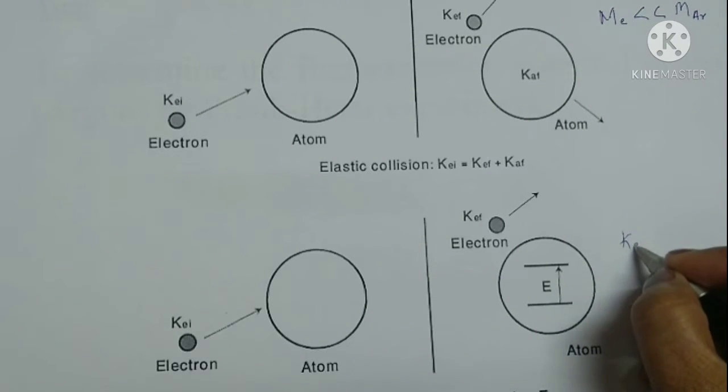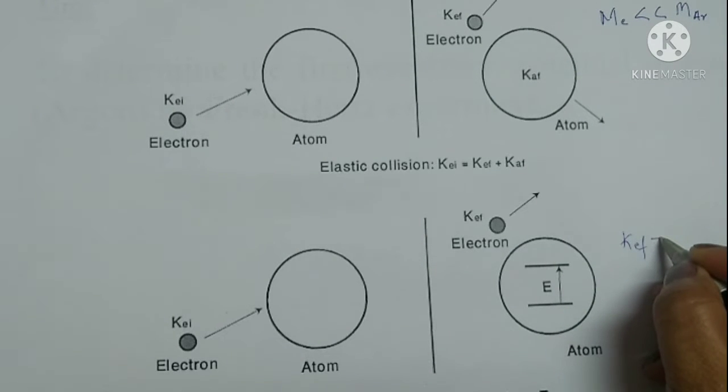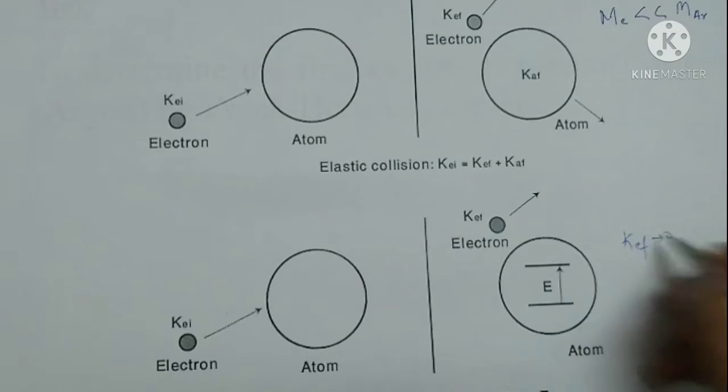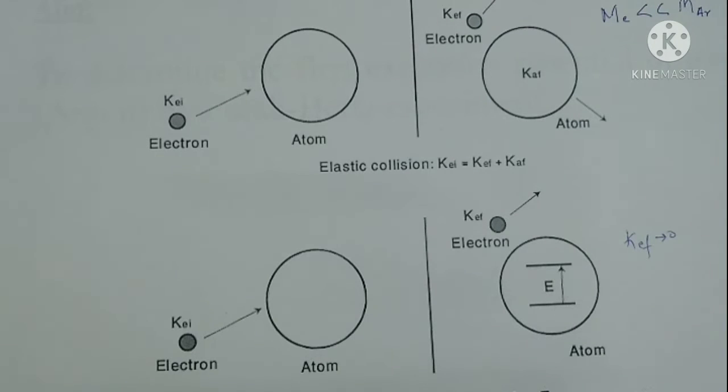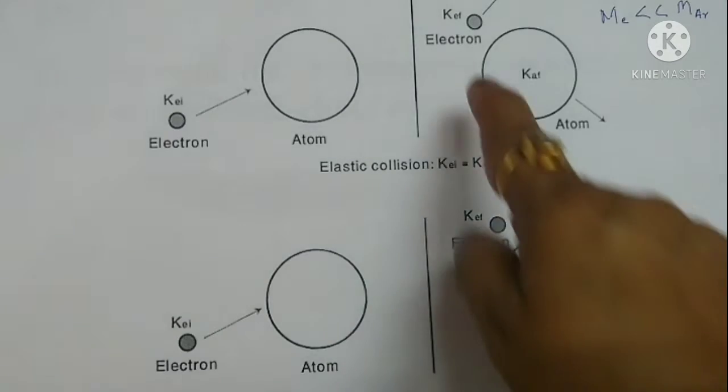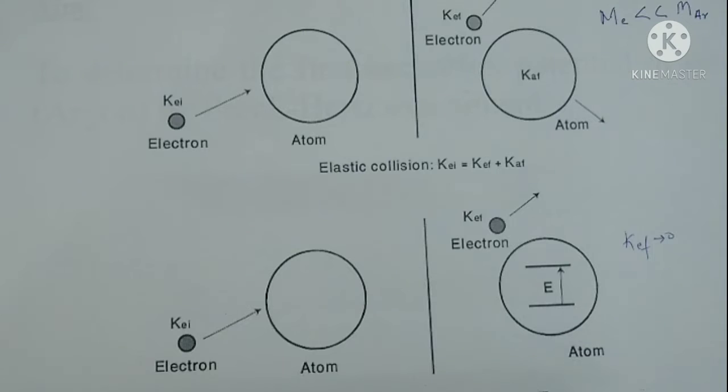Again, on increasing the accelerating voltage, if the energy of the electron becomes an integral multiple of this excitation potential, again it is used up by the argon atom to excite more electrons to the excited state, and the current again falls.